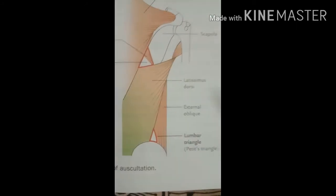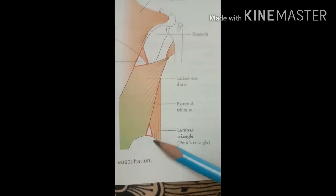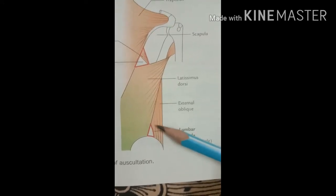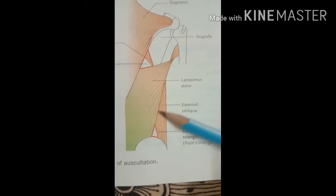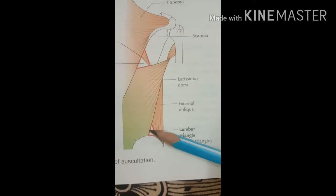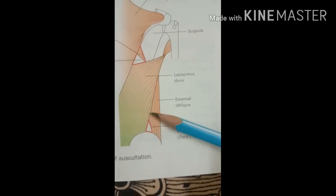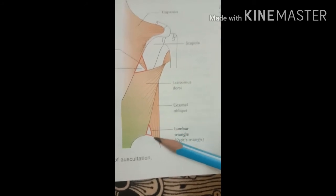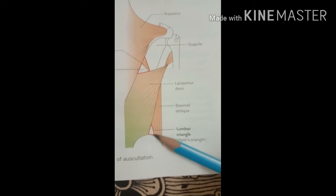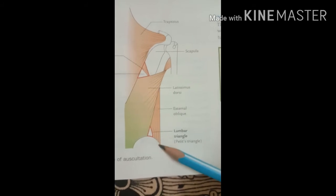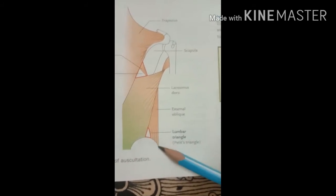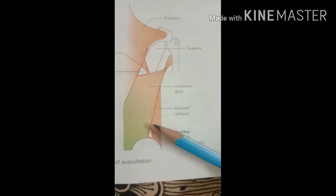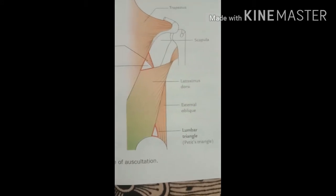The angle of Petit, or Petit's triangle, is a small triangular space present in the lower side of the back. It is bounded medially by the lateral border of the latissimus dorsi, laterally by the external oblique muscle — a muscle of the anterior abdominal wall — and inferiorly by the iliac crest, which is the rounded superior border of the ilium bone. These three borders form the triangular structure called Petit's triangle.